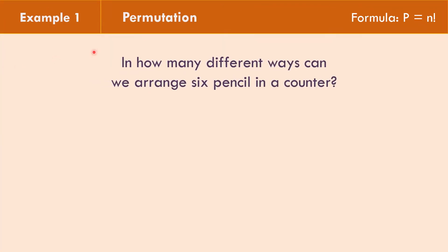In example number 1, in how many different ways can we arrange 6 pencils in a counter? So P equals N factorial. How many arrangements can be made with 6 pencils? The value of N is 6, so P equals 6 factorial.